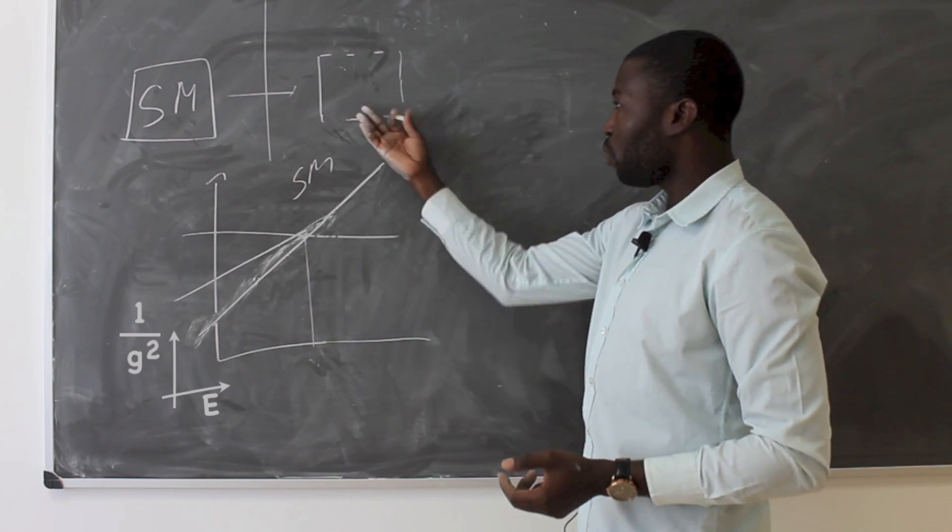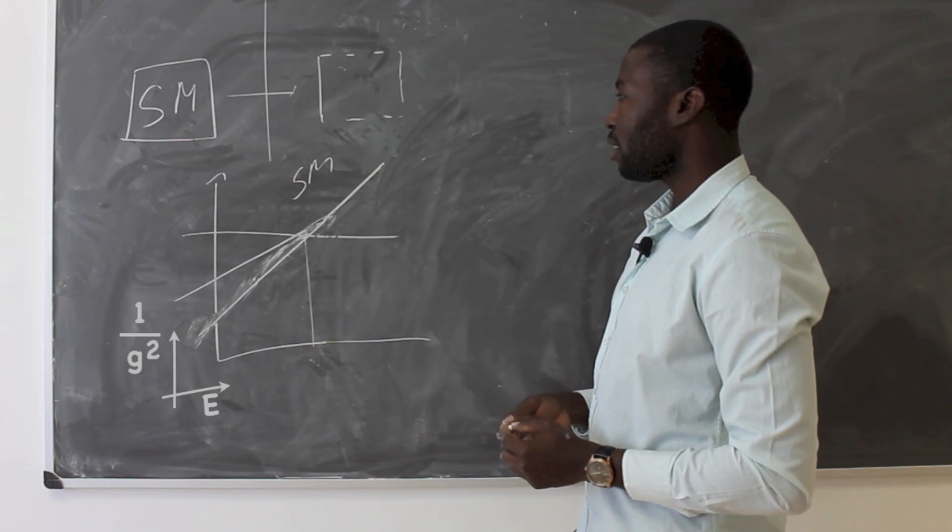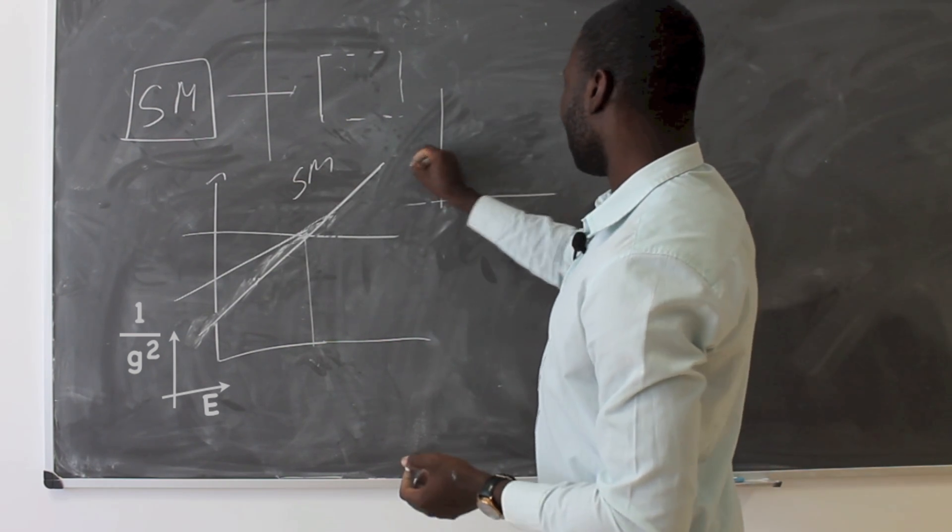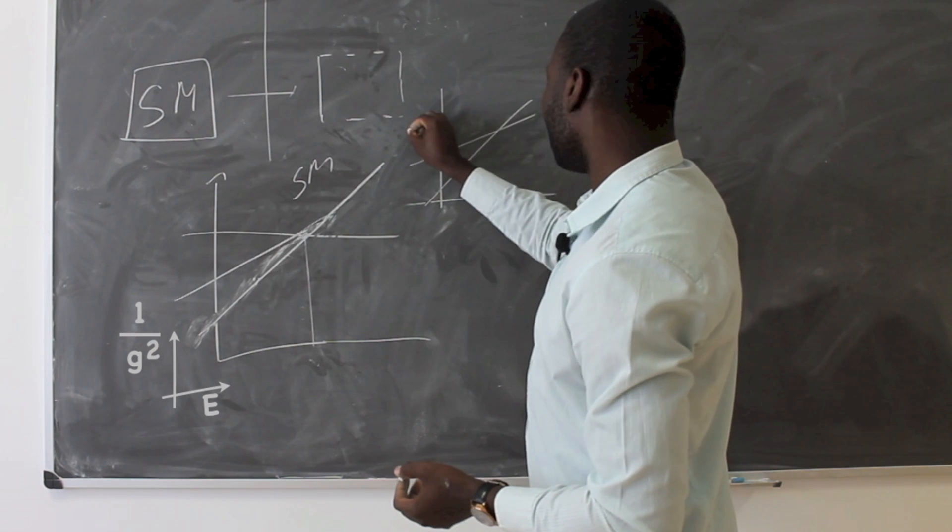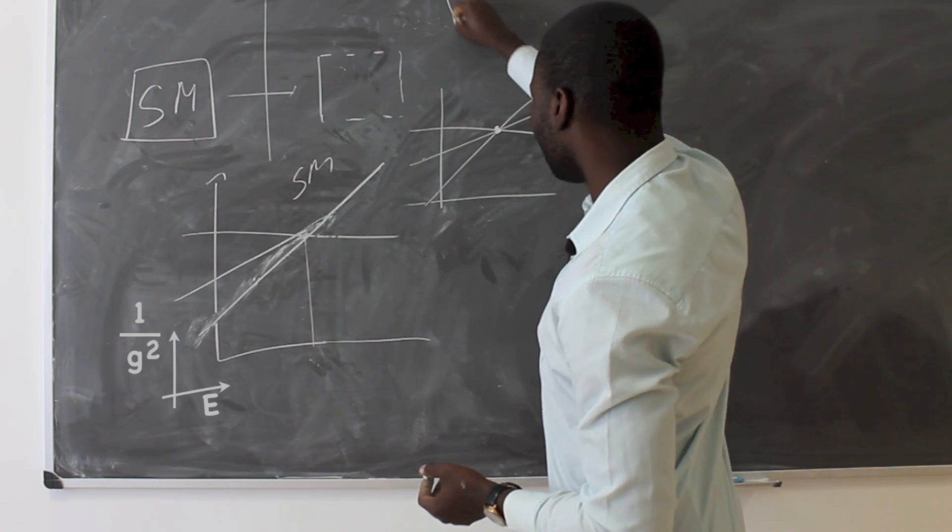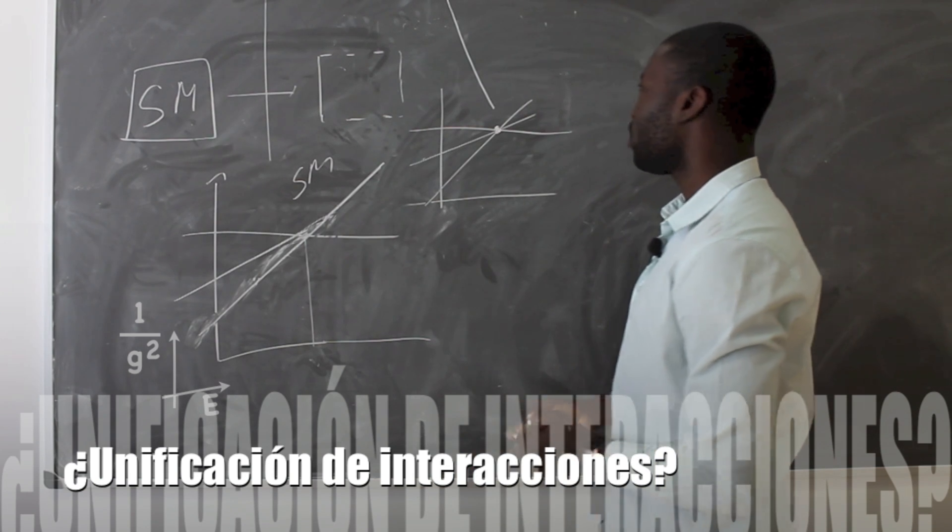But when you include the cousins of the standard model within the supersymmetry framework, what you observe is that they meet exactly in the same place. And even gravity, which is extremely weak, goes in that direction also.